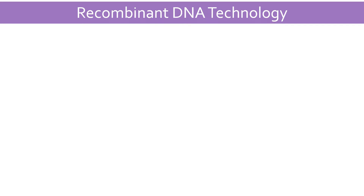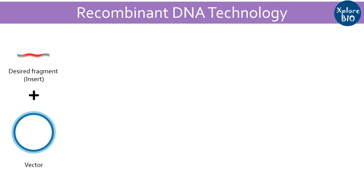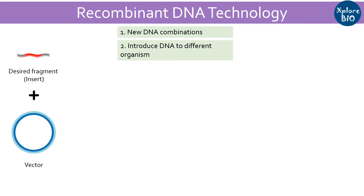Recombinant DNA technology is a set of techniques used to manipulate and combine DNA fragments, usually from different sources, creating new combinations that are not found in nature. This technology allows scientists to isolate specific genes and DNA sequences, manipulate them in various ways such as amplifying them, reintroducing them into other organisms, or getting a specific protein expressed in certain ways.